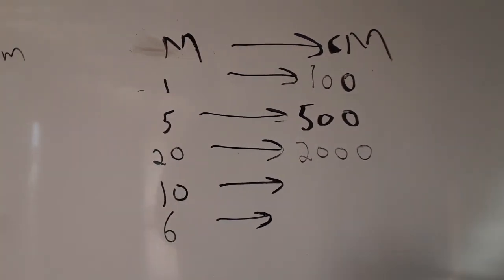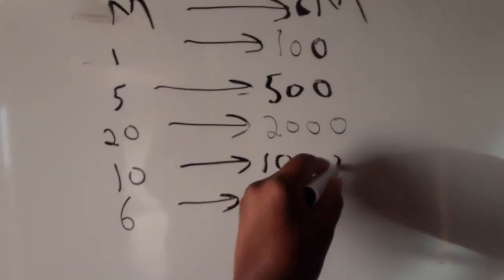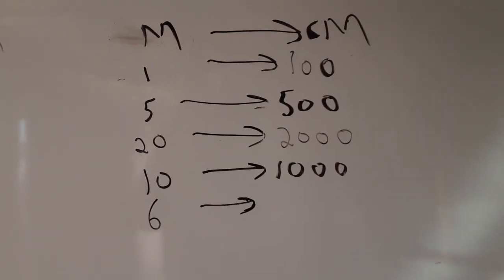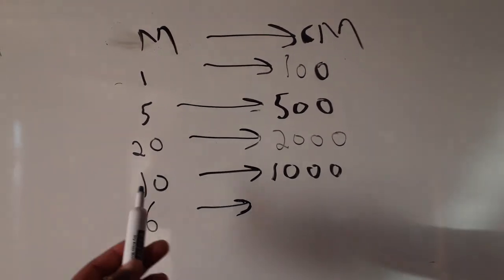Then we have 10. So 10 times 100 is going to give us 1,000. So we have 1,000 centimeters equals 10 meters.